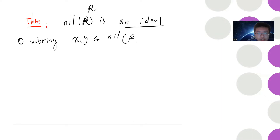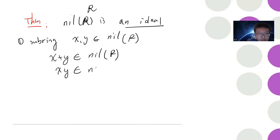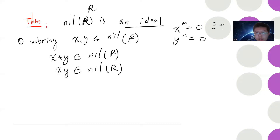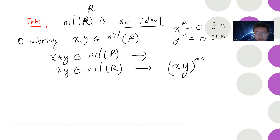We want to show x + y and x·y are in nil(R). Say x^m = 0 and y^n = 0. For the product, x·y raised to the power m·n gives x^(m·n) · y^(n·m), which is zero. So x·y belongs to nil(R).